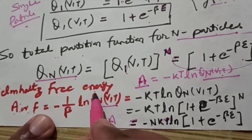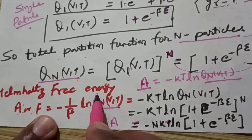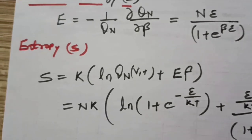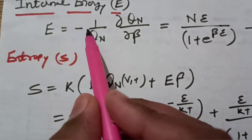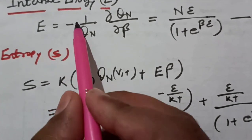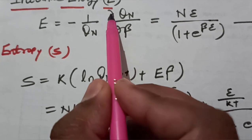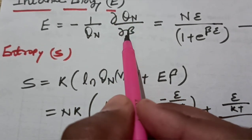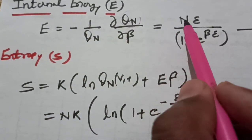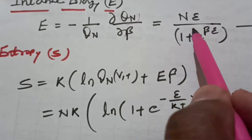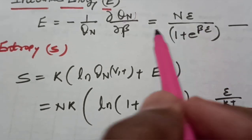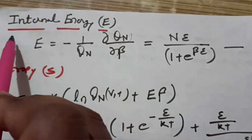This is the Helmholtz free energy for the two-level system. Next we find the internal energy, which is calculated using minus one over the partition function times the derivative of the partition function with respect to beta. Solving this gives the internal energy as N epsilon divided by (1 + e to the power beta times epsilon).